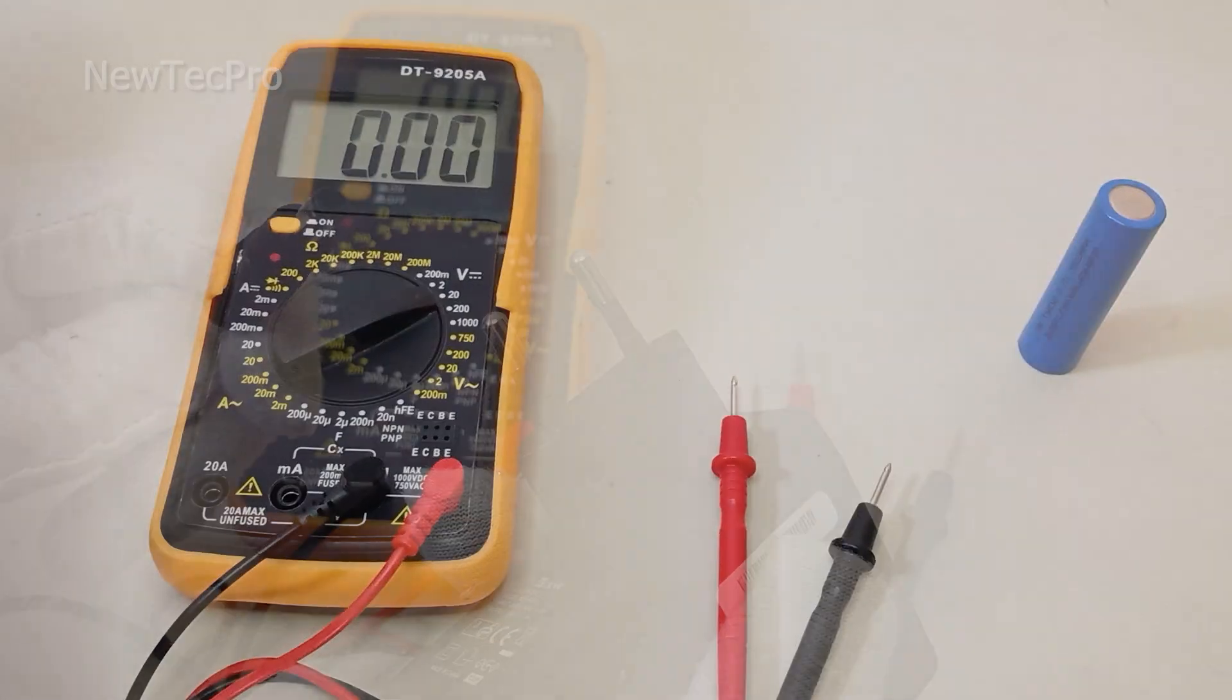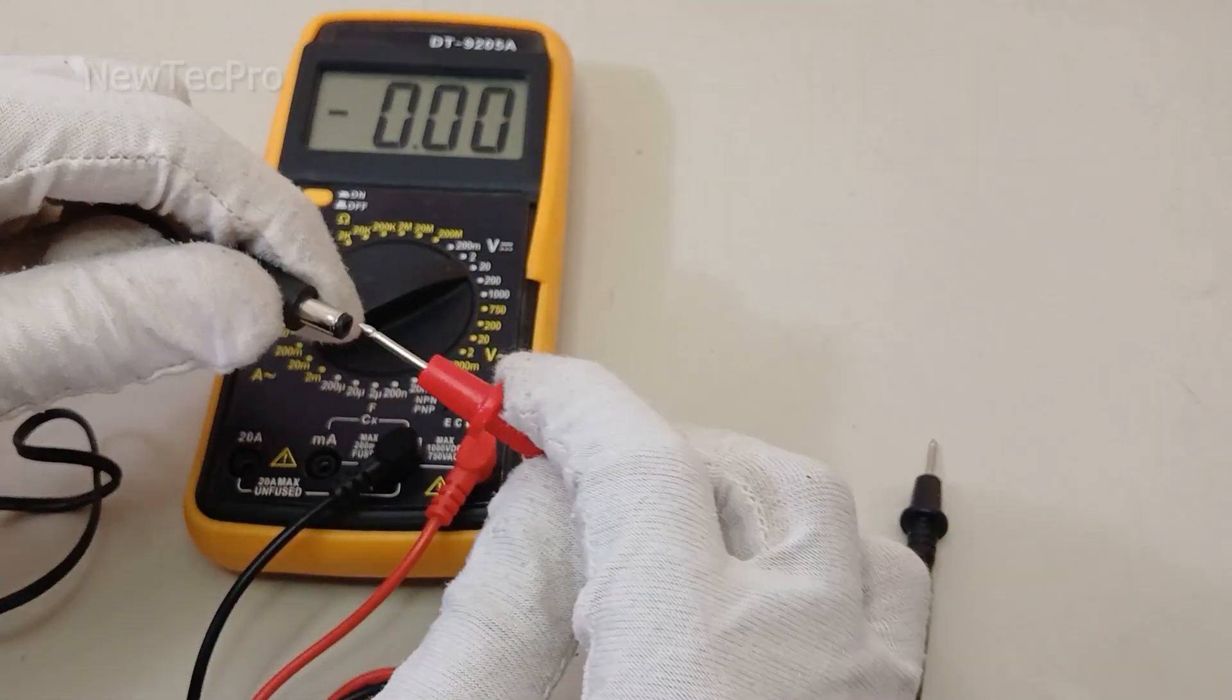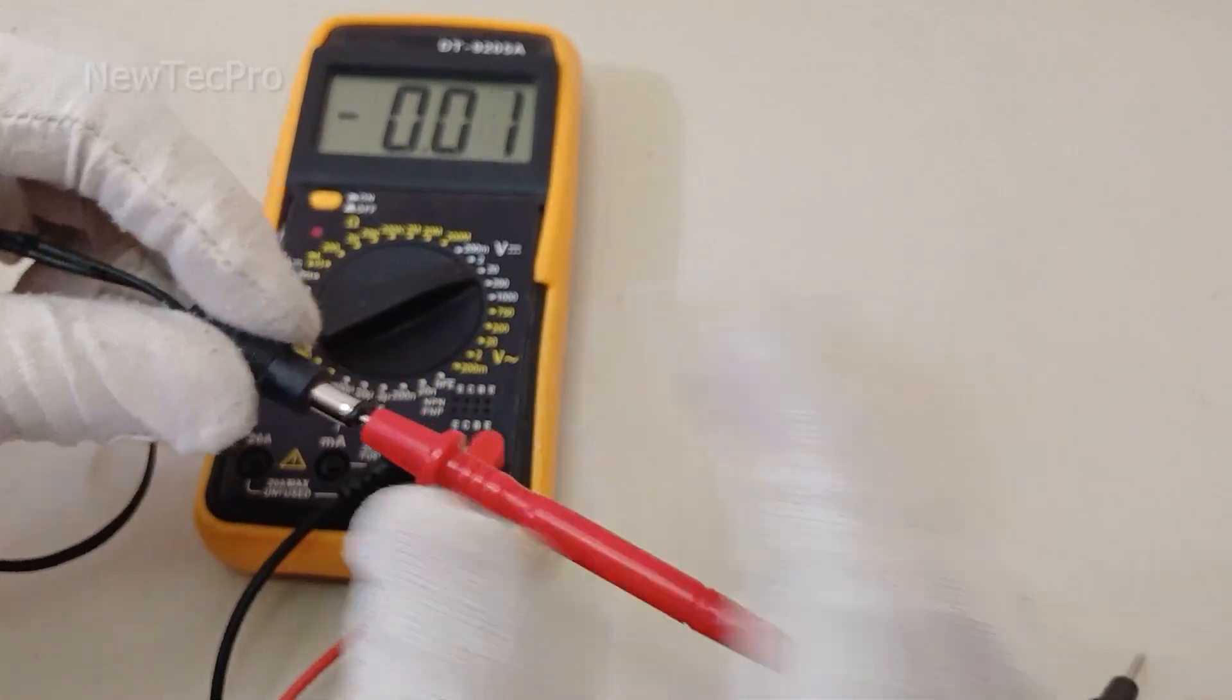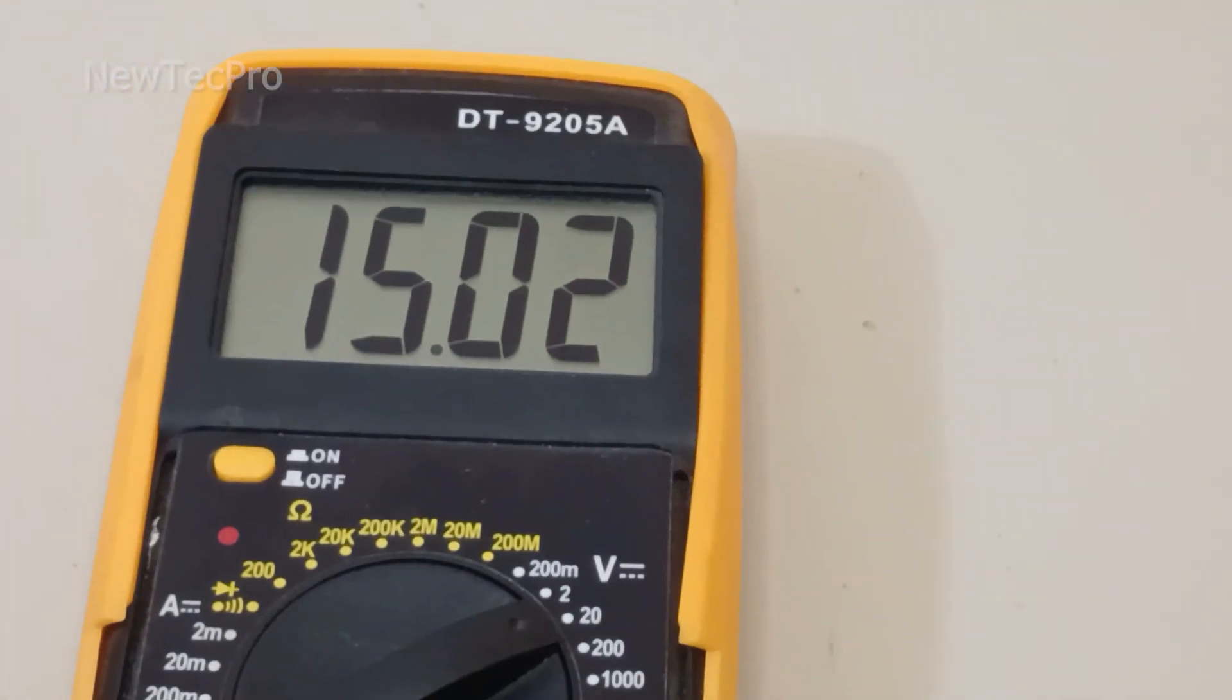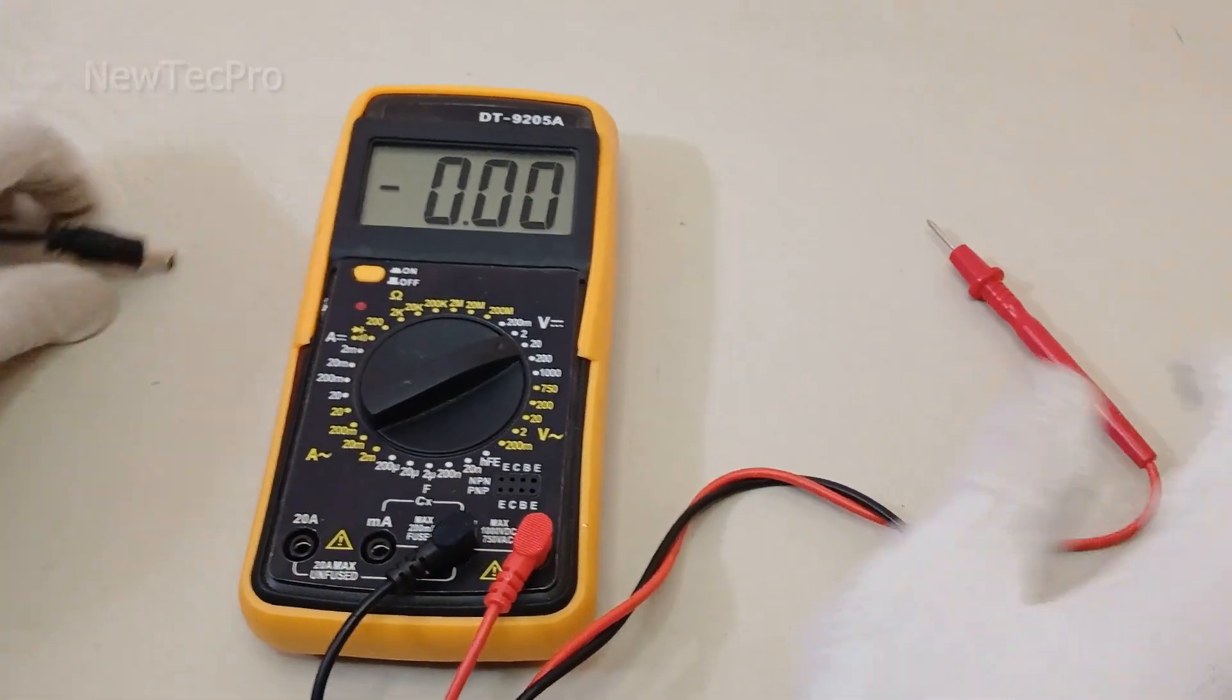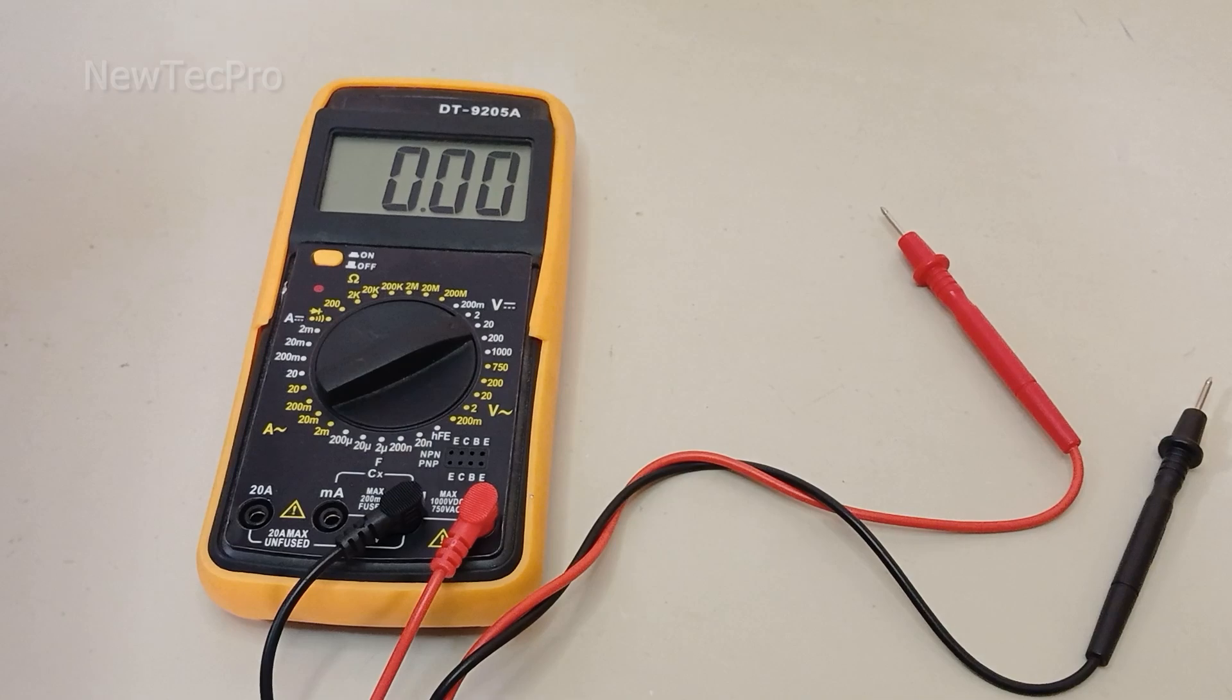Okay, let's try measuring this adapter. Let's try positive here, negative here. You can see measuring voltage DC on the AC/DC adapter.